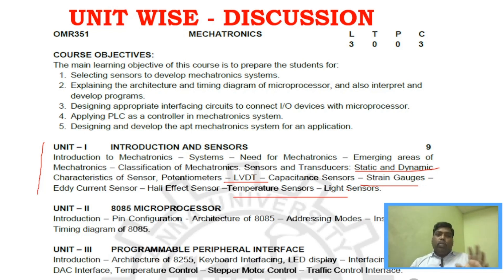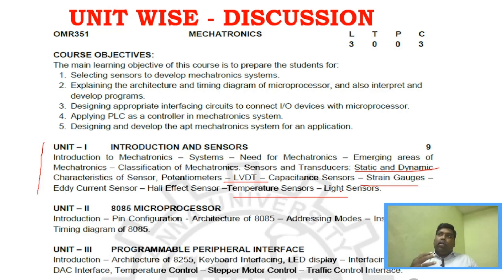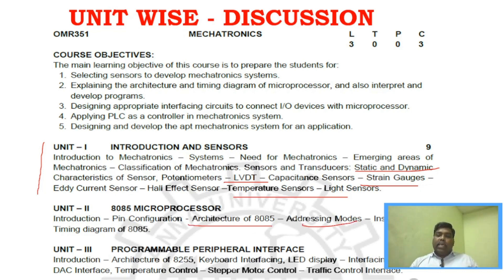Unit 1 covers what is mechatronics and its need. Unit 2 and Unit 3 are mostly about microprocessors — that is two full units. The 8085 is the easiest microprocessor, and ECE students already cover microprocessor subjects in their syllabus. For Unit 2, you need to look at the architecture, addressing modes, and instruction set of the 8085 — that is more than enough.